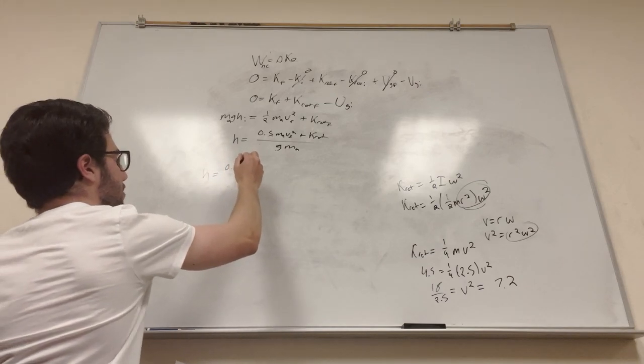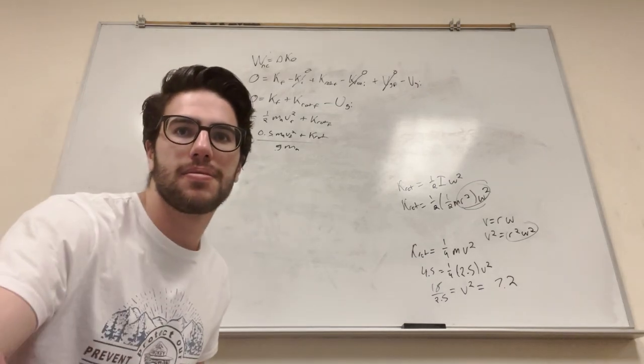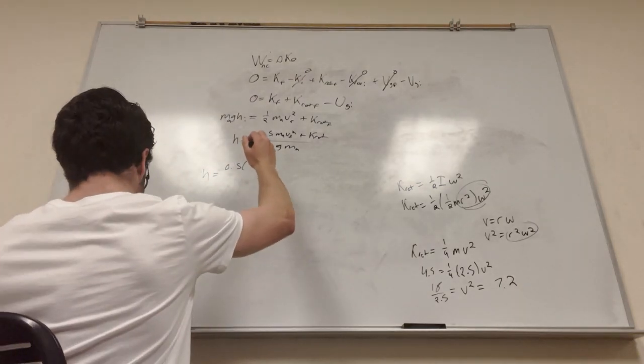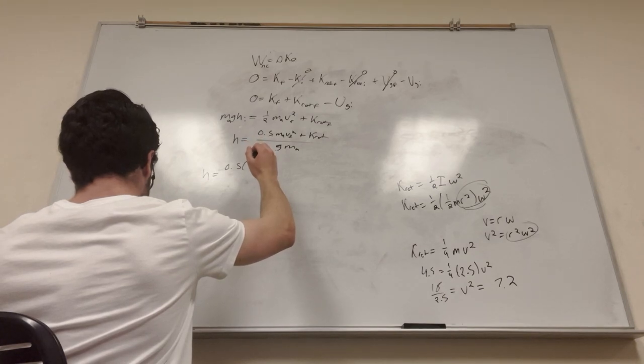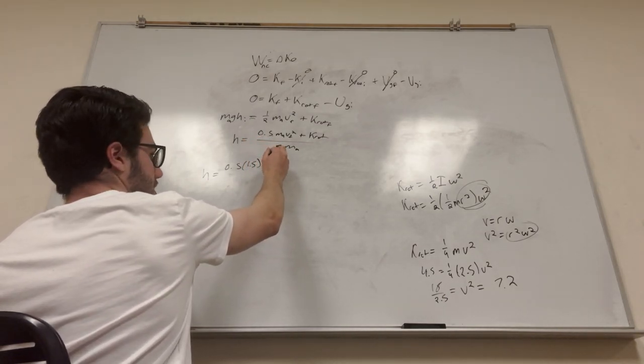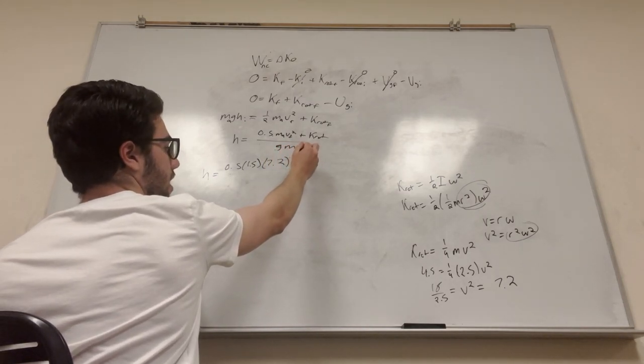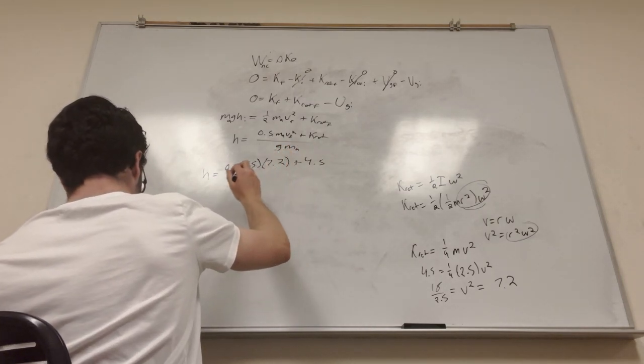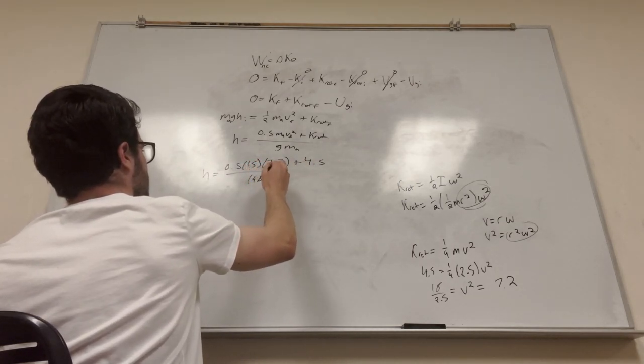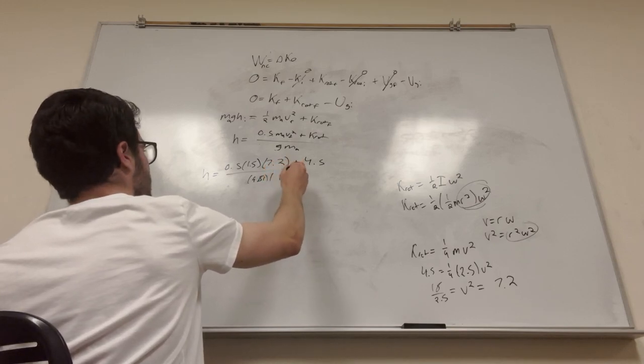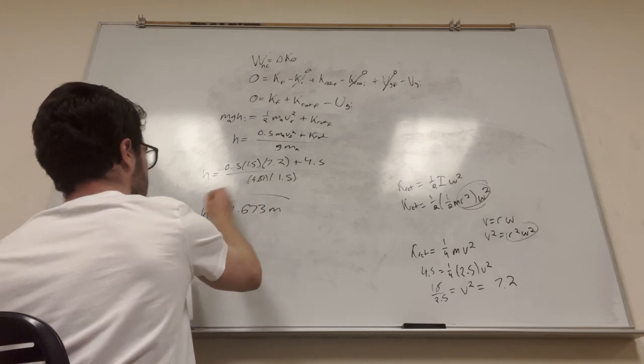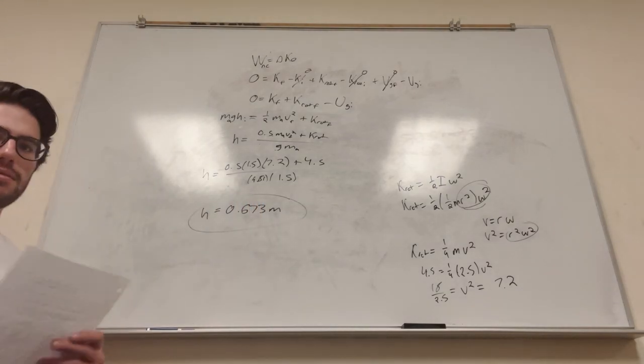So I'm just going to plug what we got. Height is equal to 0.5 mass of the stone. What is that? I can't see it. 1.5 kilograms. Yep. So 1.5. And then velocity squared, which is 7.2, plus K rotational, which is 4.5. And then you divide that by gravity, which is 9.81, mass of A, which is 1.5. And then height is going to be equal to this, which is 0.673 meters. There you go.